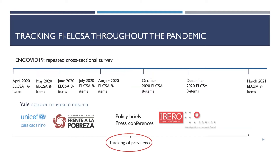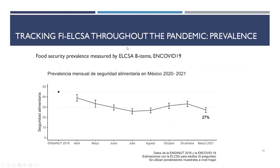Just to give you a heads up in terms of tracking of prevalence: we had these repeated cross sections and it became really important as a key outlet for publicly stating what was going on with food insecurity in Mexico, leading to the generation of policy briefs and press conferences. Many of us — Pablo and Rafael — collaborated in some of them. A key that did very rightly was to partner with different organizations for these policy briefs and press conferences, such as NGOs, international organizations, and other local and international organizations. Most of this information is available online, including the press conferences.